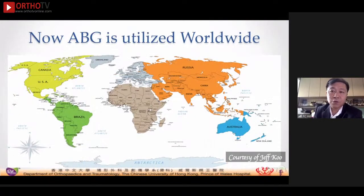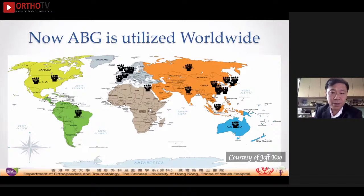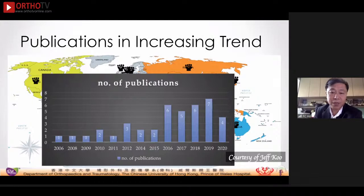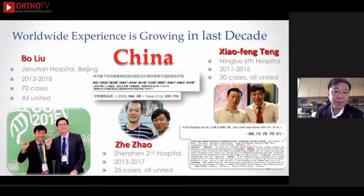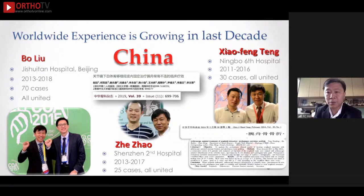Over the past decade, ABG has been utilized much more widely. In our home country in China, Dr. Bo Liu in Beijing performed 70 cases with 100% union. In the Shenzhen area, between 2013 and 2017, 25 cases in Dr. Zhao Ji's center — all united. And Dr. Tang, one of the earliest hospitals in China to practice this, 30 cases — all united.